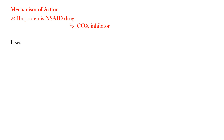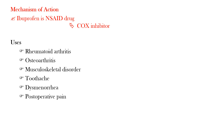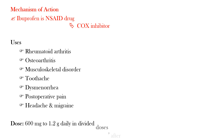The uses of Ibuprofen include rheumatoid arthritis, osteoarthritis, musculoskeletal disorder, dysmenorrhea, postoperative pain, headache, and migraine. The dose of Ibuprofen is 600 mg to 1.2 grams daily in divided doses after food.